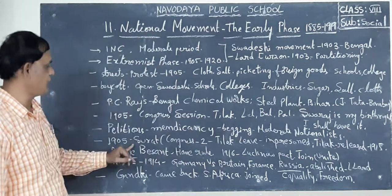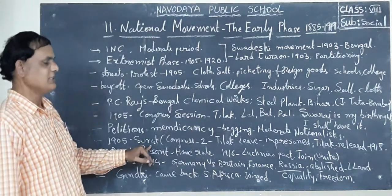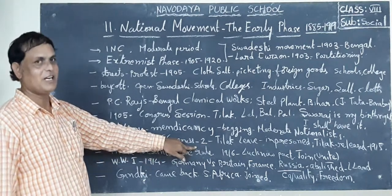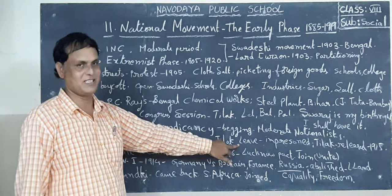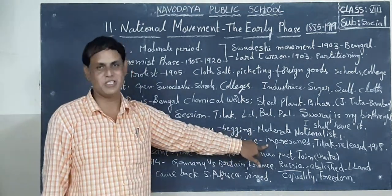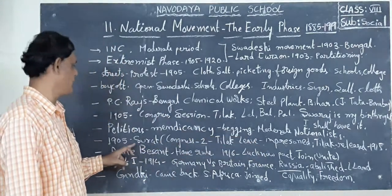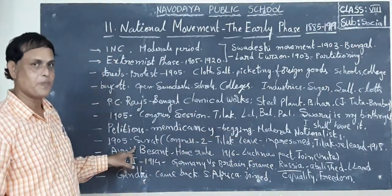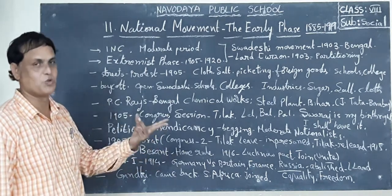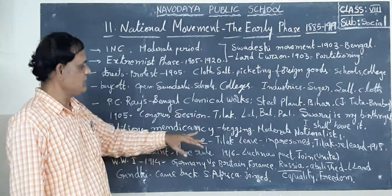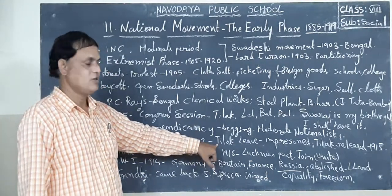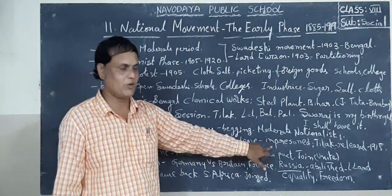In 1905, the Surat Congress session split the Congress into two parts. That is why Tilak left the Congress. Afterwards, he was imprisoned by the British government. This is very important - in 1905 the Surat Congress session split into two, and Tilak left Congress and was subsequently imprisoned by the British government.